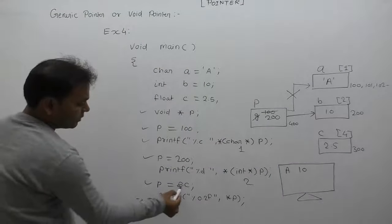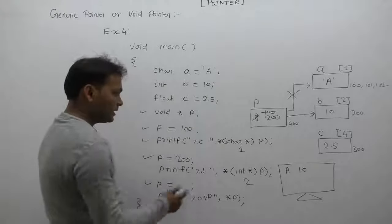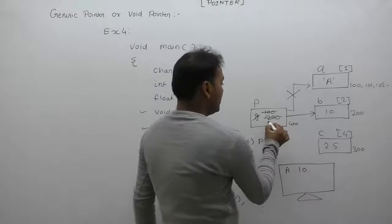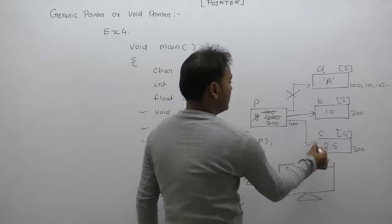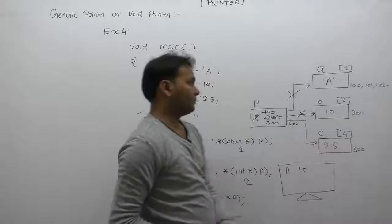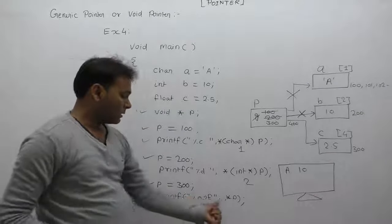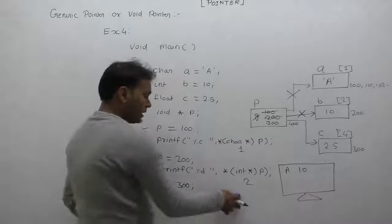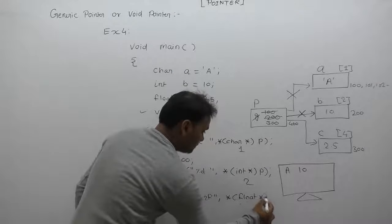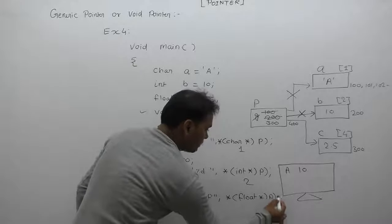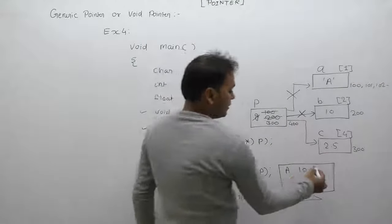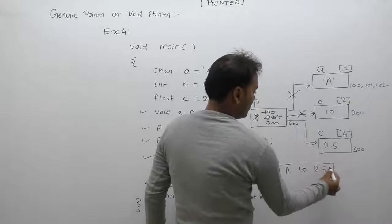Next time, same pointer is assigned address of C. C's address is 300, so it points to location 300. Now it is pointing to new location C. For C, again we cannot apply star directly. It requires type casting into float star. This is the way of using void pointer through type casting. Using type casting, we can access different type locations. Next time it will display 2.50.